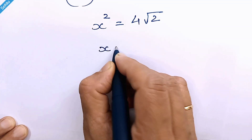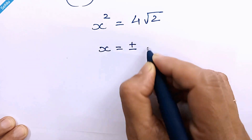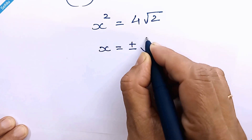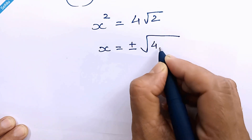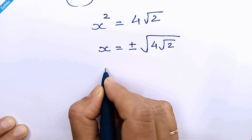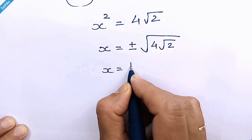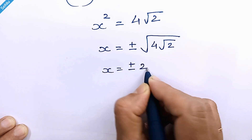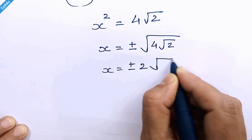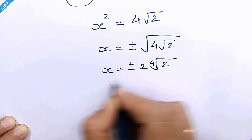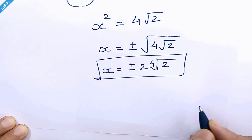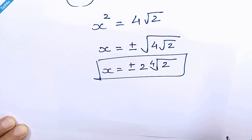Therefore x is equal to plus or minus square root of 4 square root of 2, which simplifies to x equals plus or minus 2 times the fourth root of 2. And this is our answer. Thanks for watching — don't forget to subscribe. We'll meet in the next one. Bye bye.